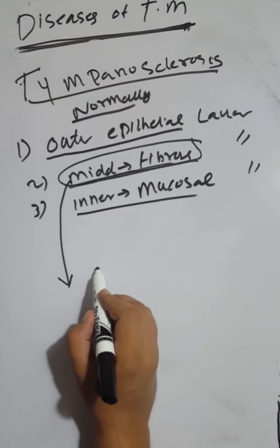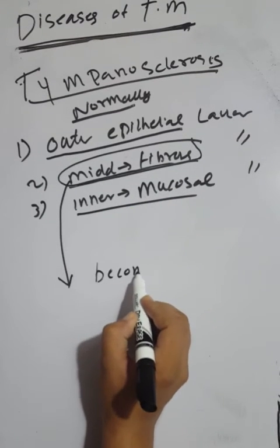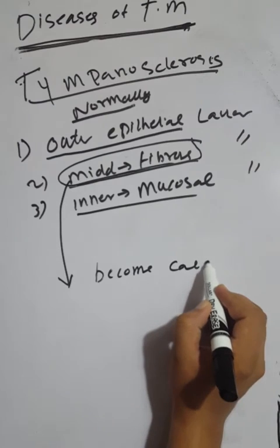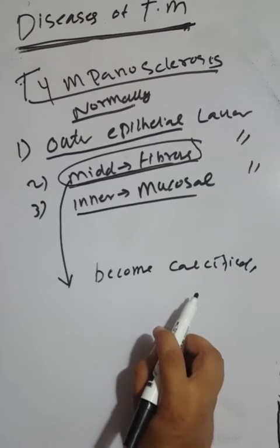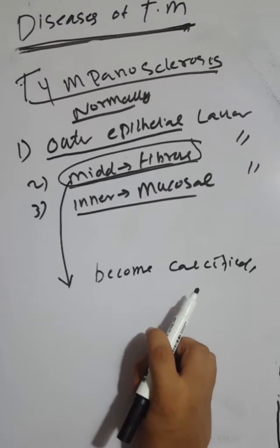Normally in most cases, tympanosclerosis is asymptomatic. However, in cases of serious otitis media that involve the middle fibrous layer of the tympanic membrane, it becomes calcified and symptoms appear.